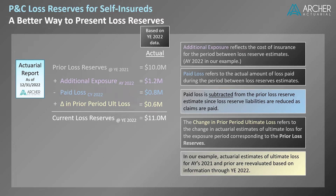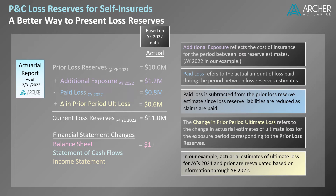An easy way to make these results more practical for self-insured clients is to calculate the resulting financial statement changes. The change in the balance sheet between year-end 2021 and year-end 2022 equals $1 million — just the change in the respective loss reserve estimates. The change in the statement of cash flows is $800,000, the amount of loss paid in calendar year 2022. Perhaps most importantly, the change in the income statement is $1.8 million, equal to the $1.2 million of additional exposure plus the $600,000 change in prior period ultimate loss.